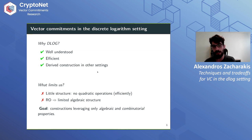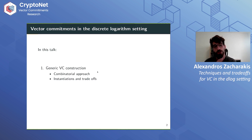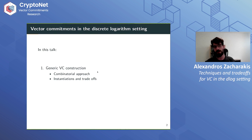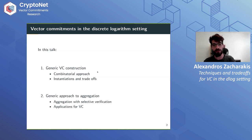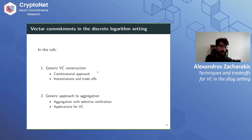Our goal is to use only clean algebraic and combinatorial properties and see where this can go. Specifically in this talk, I will focus on two parts. First, I will present some generic constructions using these combinatorial and algebraic properties. And we will discuss some instantiations and trade-offs in the discrete logarithm setting — though it's not limited to that; you can easily instantiate in the pairing setting as well. Then we will discuss aggregation with selective verification and demonstrate it for vector commitment constructions.